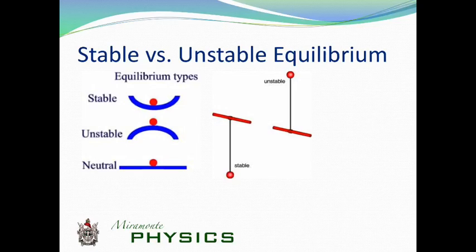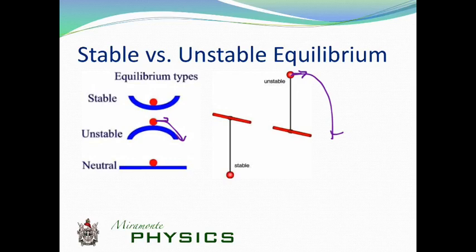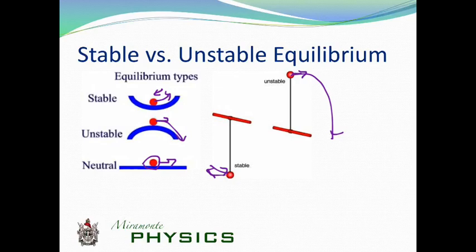Equilibrium means it's staying put — sum of forces is zero, sum of torques is zero. Unstable equilibrium means that if you give it a little push, it goes off down the hill or tips over. Stable equilibrium means that if you push it off to one side, it goes right back to where it belongs. Neutral equilibrium means you push it one way, it doesn't go tipping off and doesn't return — it just stays wherever you pushed it.